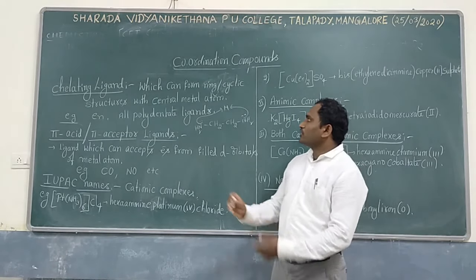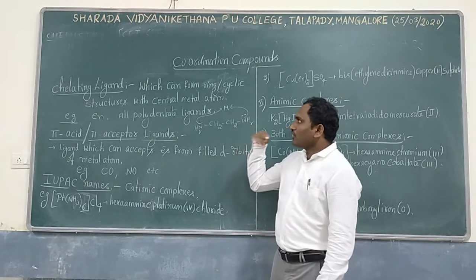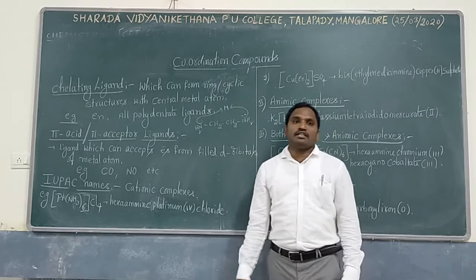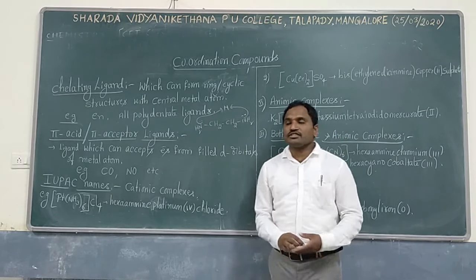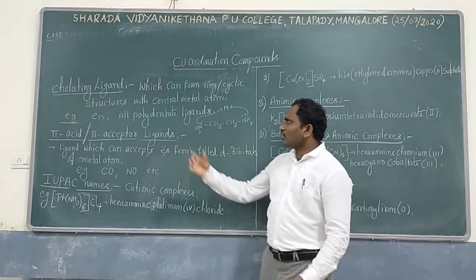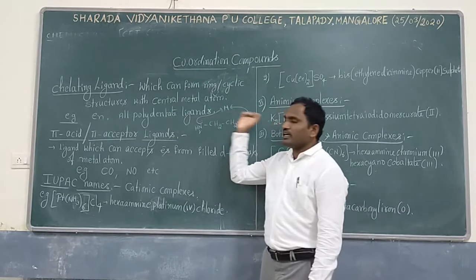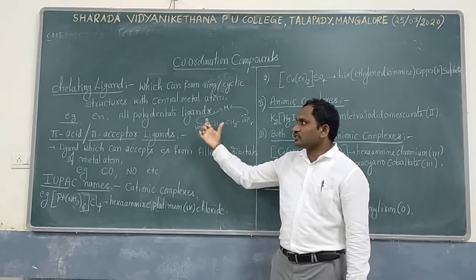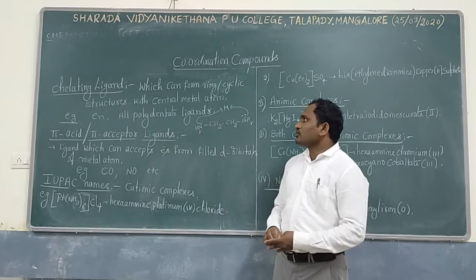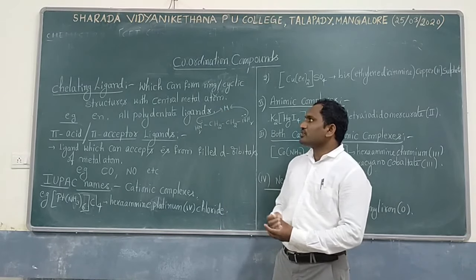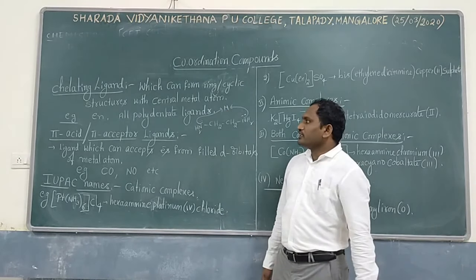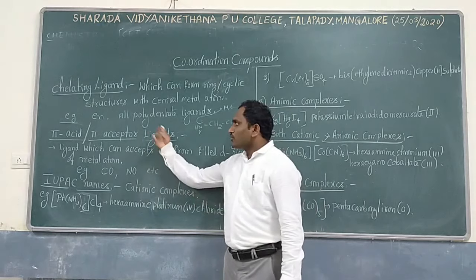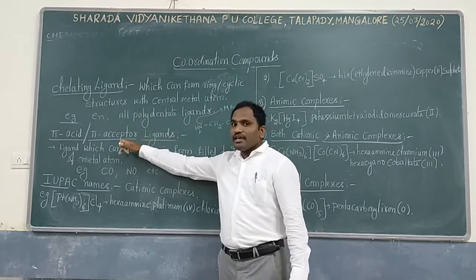One more thing: among the following, which is a chelating ligand — if they ask — almost all polydentate ligands can form ring type structures. So all are potentially chelating ligands.